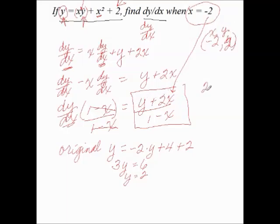2 plus 2 times negative 2 over 1 minus negative 2. And we end up with negative 2 over 3.